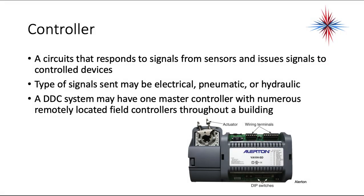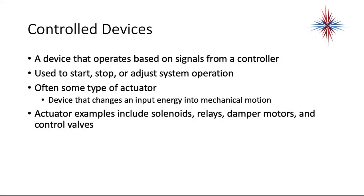A controller is a circuit that responds to signals from sensors and issues signals to control devices. Types of signals sent may be electrical, pneumatic, or hydraulic. A DDC system may have one master controller with numerous remotely located field controllers throughout a building. A controlled device operates based on signals from a controller and is used to start, stop, or adjust system operation — it is often an actuator. An actuator is a device that changes input energy into mechanical motion; examples include solenoids, relays, damper motors, and control valves.